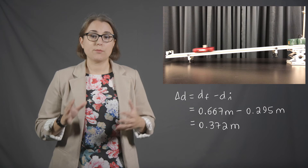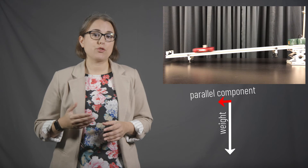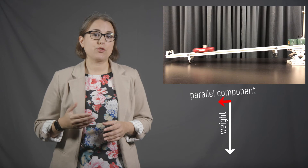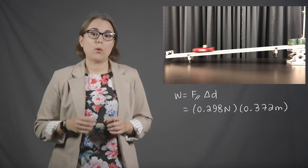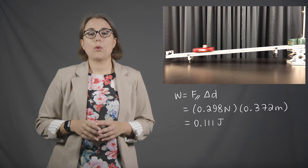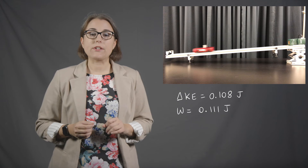Work was done on the cart by gravity. It moved 0.372 meters from start to finish. The force of gravity must be split into components — only the component parallel to the track matters. Using trigonometry, that parallel component is 0.298 newtons. Multiplying 0.372 m × 0.298 N gives work done by gravity of 0.111 joules — in very close agreement with the ΔKE of 0.108 joules. The slight difference is very likely due to dissipative forces such as friction and air drag not accounted for in the calculations.